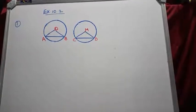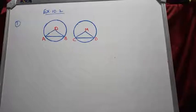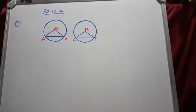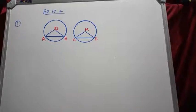Now we can move to the exercise questions. The first exercise, Exercise 10.1, has fill-in-the-blank and true or false questions. All questions are based on the basic things discussed in the first module about the circle, which you can do by yourself in the text.